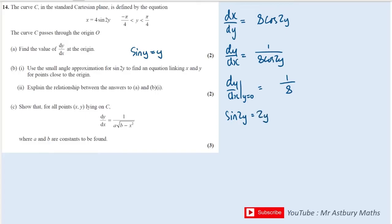Okay, now we need it to link x and y, so we need to use this equation here, because that links x and y. So I can say that x is approximately equal to 4, and sine 2y we're going to call 2y. So we get that x is approximately equal to 8y.